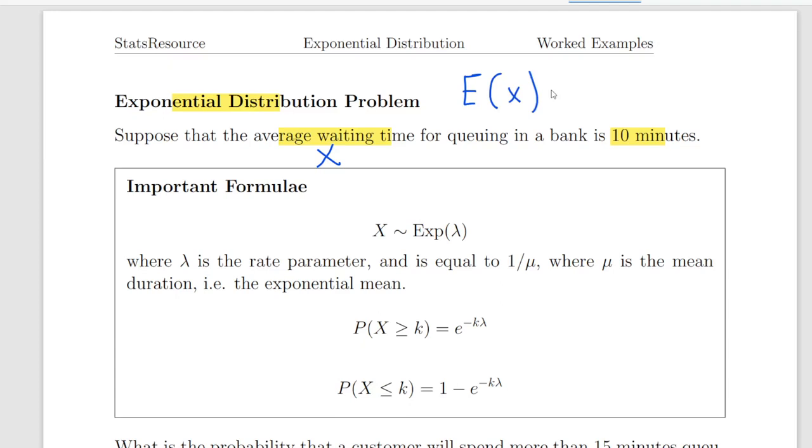Now, this is how we might formally state this variable here, the waiting time. It's an exponential random variable with rate parameter lambda, and the rate parameter lambda is equal to 1 over mu, where mu is the mean duration, the mean waiting time, essentially. So mu here is equal to 10. That means our rate parameter is 1 over 10.